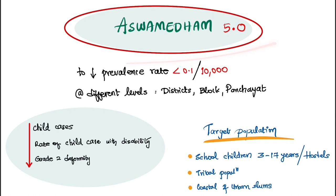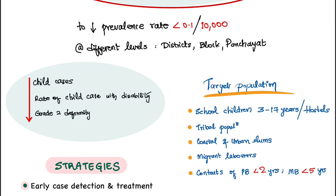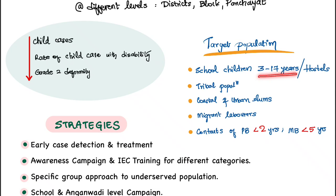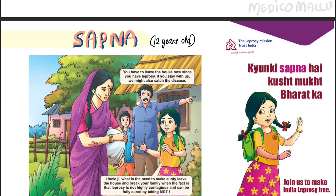Another program active in Kerala is Ashwamedham, now in version 5.0, aimed at decreasing the prevalence rate to less than 0.1 per 10,000. It is implemented at district, block, and panchayat levels. Targets include reducing child cases, the rate of child cases with disability, and grade-2 deformity. Target populations include school children aged 3 to 17, hostel residents, tribal populations, coastal and urban slum communities, migrant laborers, and contacts of leprosy patients — less than 2 years for paucibacillary, less than 5 years for multibacillary.